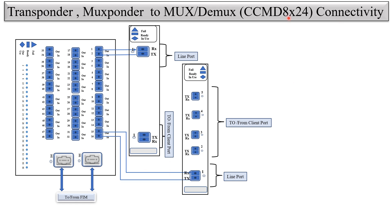The CCMD8 Cross 24 is a colorless device — any port can be tuned to any color or wavelength. That's why it's called a colorless MUXDEMUX. This is how the physical connectivity between transponder/muxponder and the MUXDEMUX — the CCMD8 Cross 24 — is established. Thanks for watching.